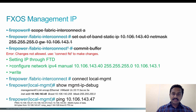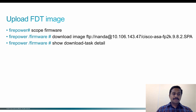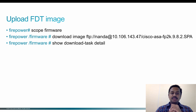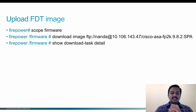Once the ping is successful, go to 'scope firmware' and from there execute the 'download image' CLI to download the image to FXOS. As mentioned previously, there are various file transfer methods: FTP, SFTP, TFTP, SCP, and also through local USB. You can see the progress of the download using the 'show download task detail' command.